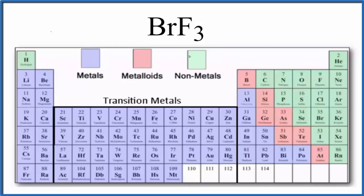The first thing we can do is look at the periodic table. We have bromine, that's right here, that's a non-metal, and fluorine, that's right here, that's a non-metal. When we have two non-metals, we're expecting that this is going to be a covalent, also called a molecular compound.